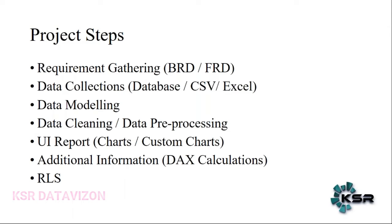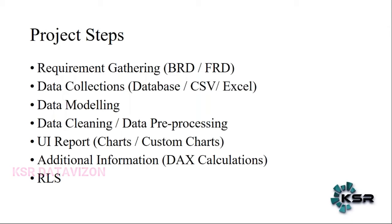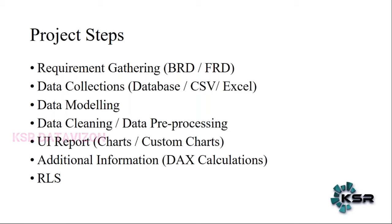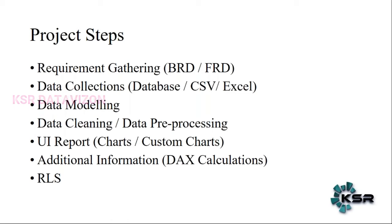The first step is you will be getting the requirement in the form of a document. There will be two documents that you will be receiving. One is called BRD, which is the Business Requirement Document. And one is FRD, which is the Functional Requirement Document. The BRD will have a clear picture of all the steps, all the business needs, all the business use cases.